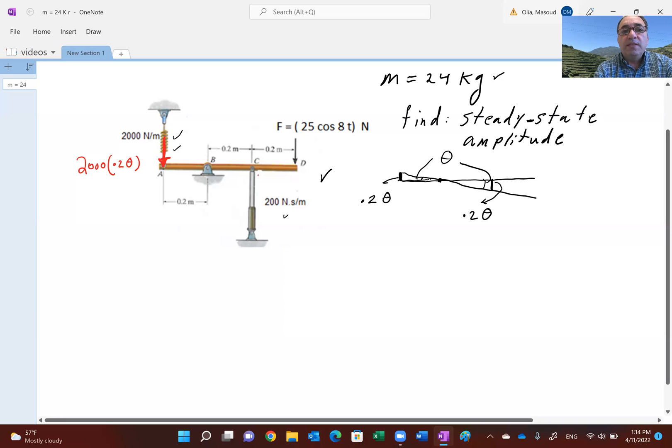Similarly, the damper is pushed down due to this applied force, so the damper is going to push up. The force of the damper is equivalent to the damping constant, which is 200 times the velocity of this point, which would be 0.2 times theta dot.